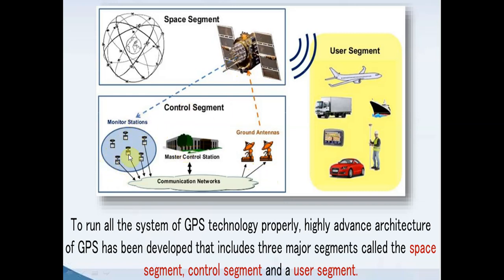We have monitoring stations. We monitor things — monitor the aircraft, everything. We have a monitoring control station and communication network. This is a very vast and advanced architecture. In order to run all the GPS technology properly, a highly advanced architecture is needed. GPS has been developed to include three major systems.